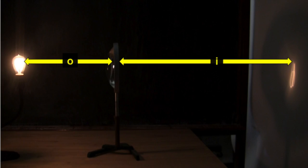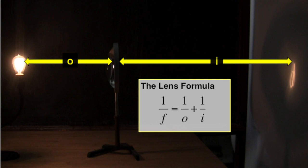The object distance, image distance, and focal length of the lens are related by the lens formula. This equation states that 1 over the focal length is equal to 1 over the object distance plus 1 over the image distance.